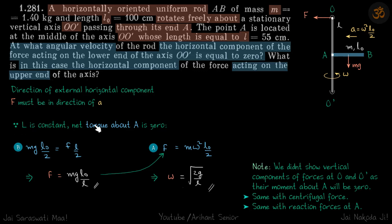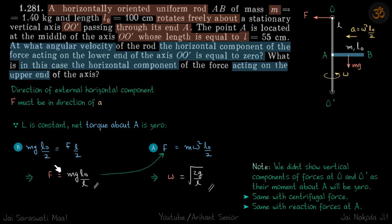Since the system rotates with constant omega, angular momentum about A is constant, meaning net torque about A is zero. Considering the in-plane direction, there is no rotation, so the torque equation gives: mg·(l₀/2) = F·(l/2).